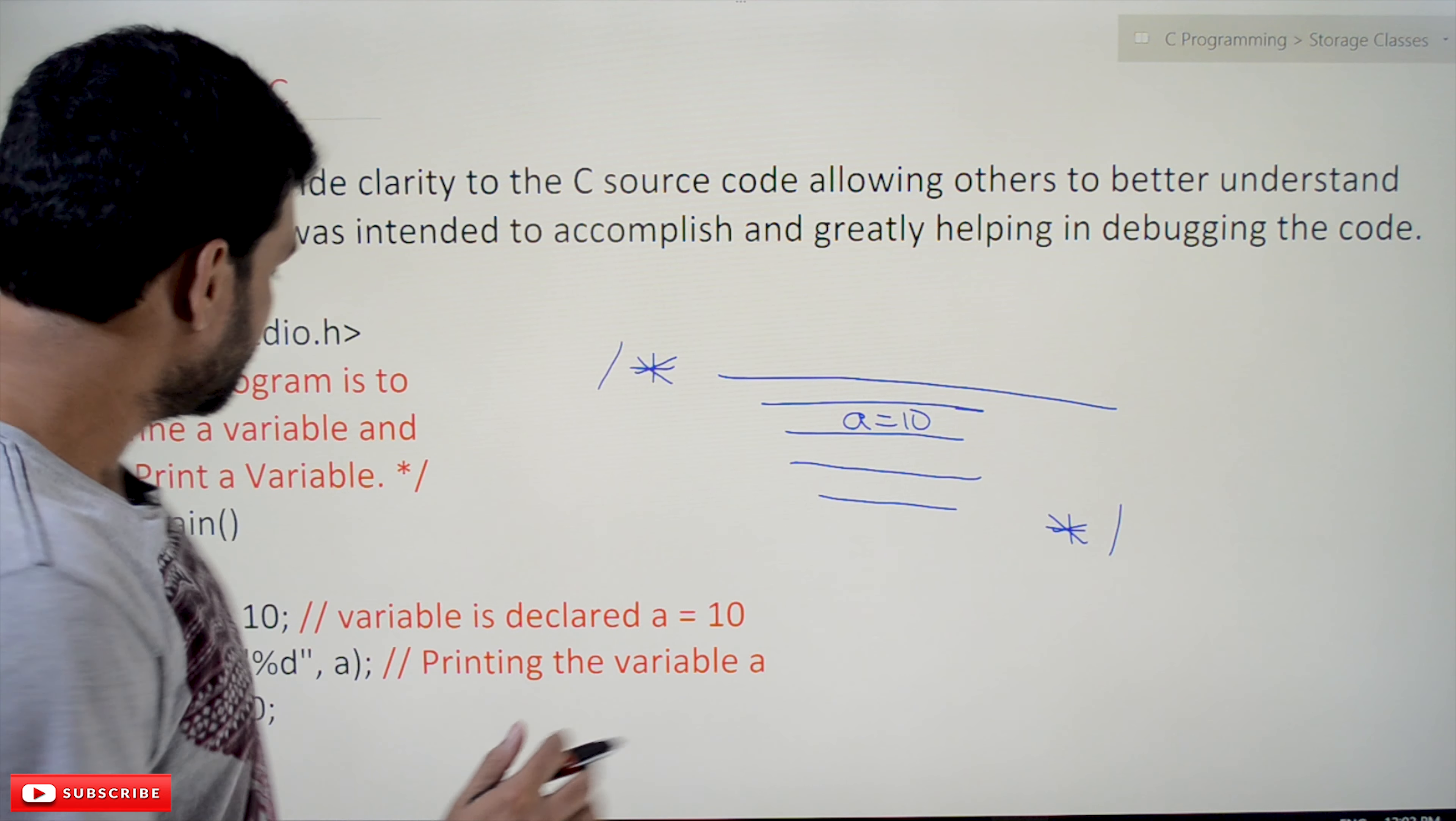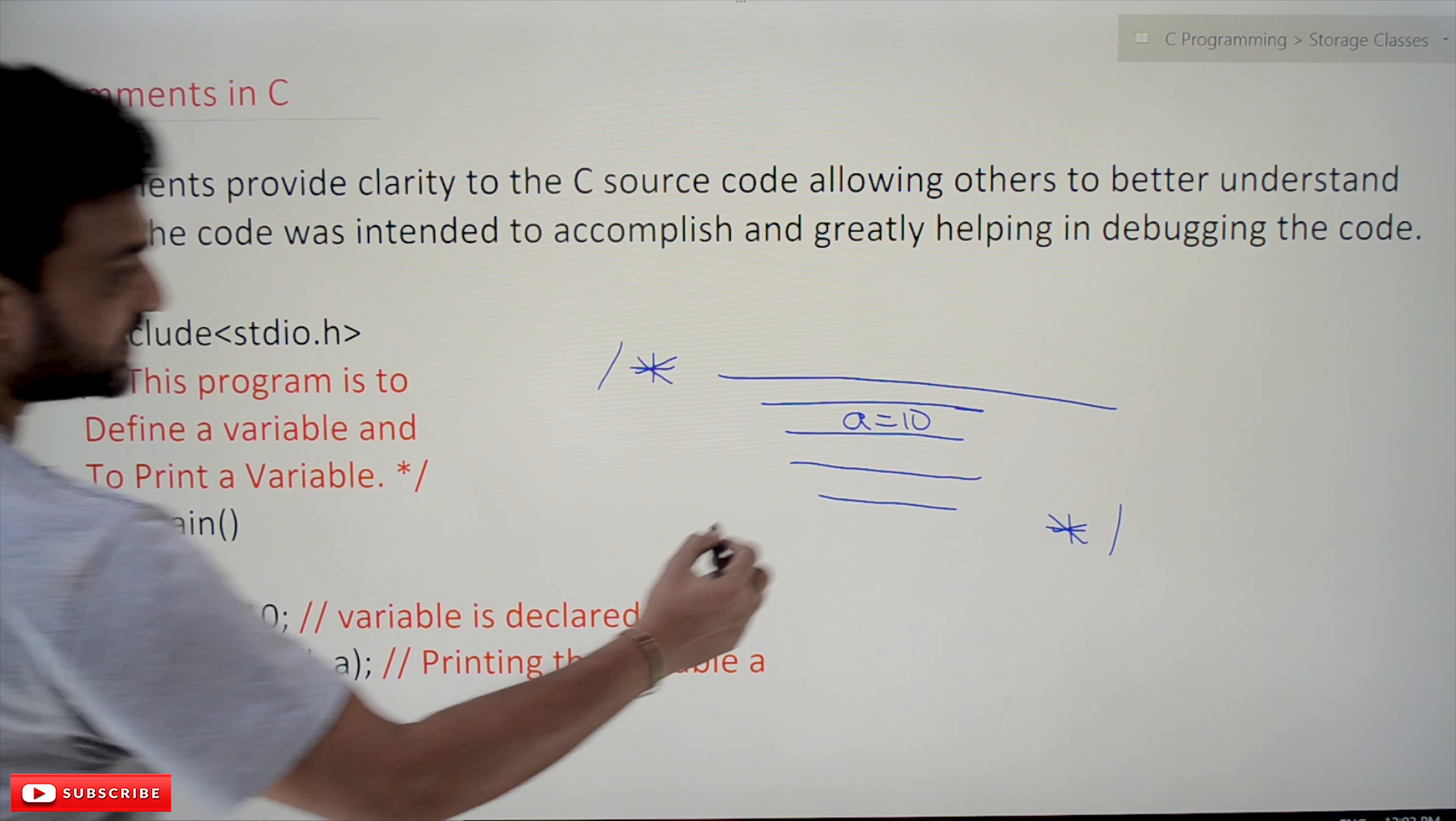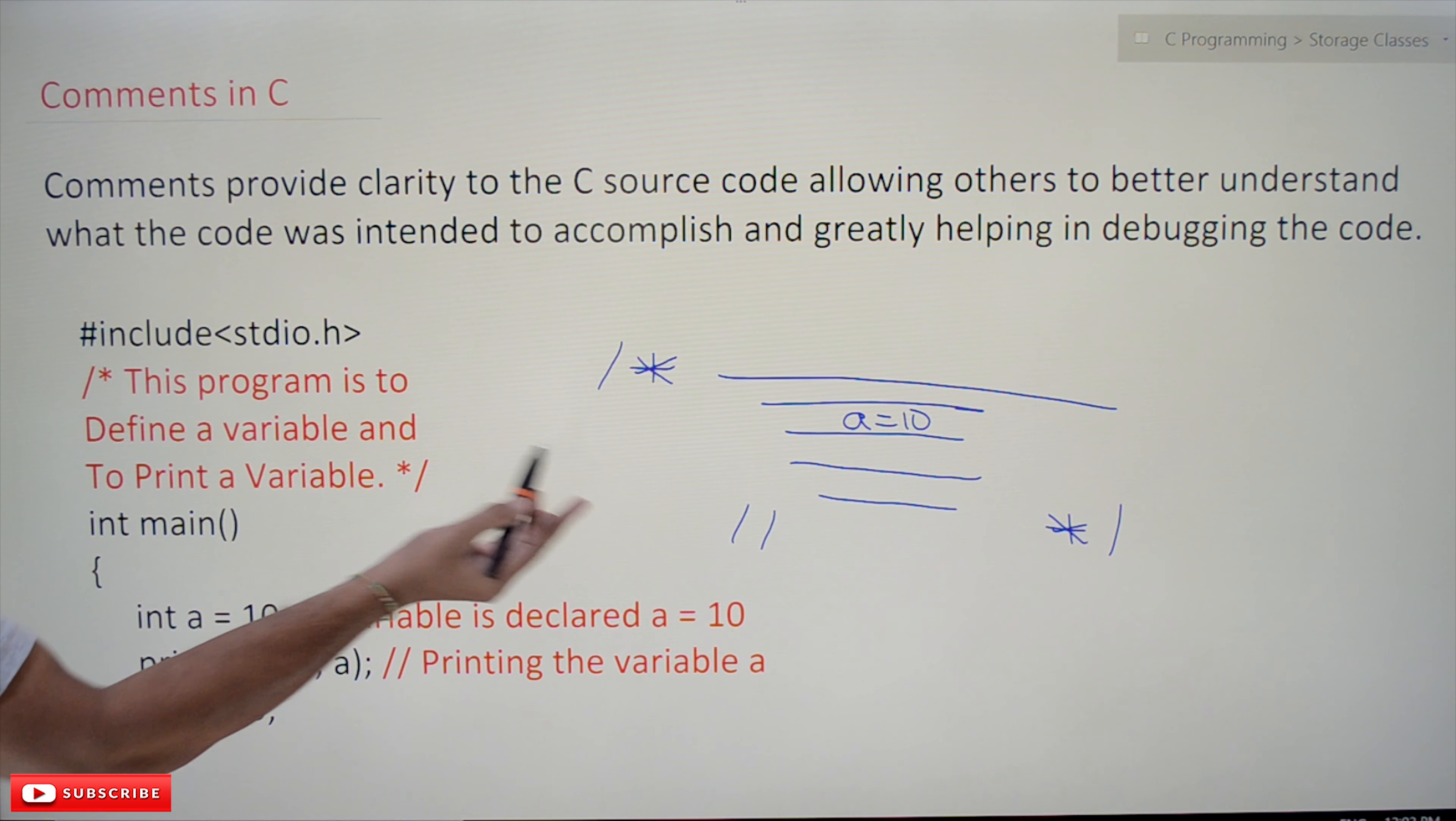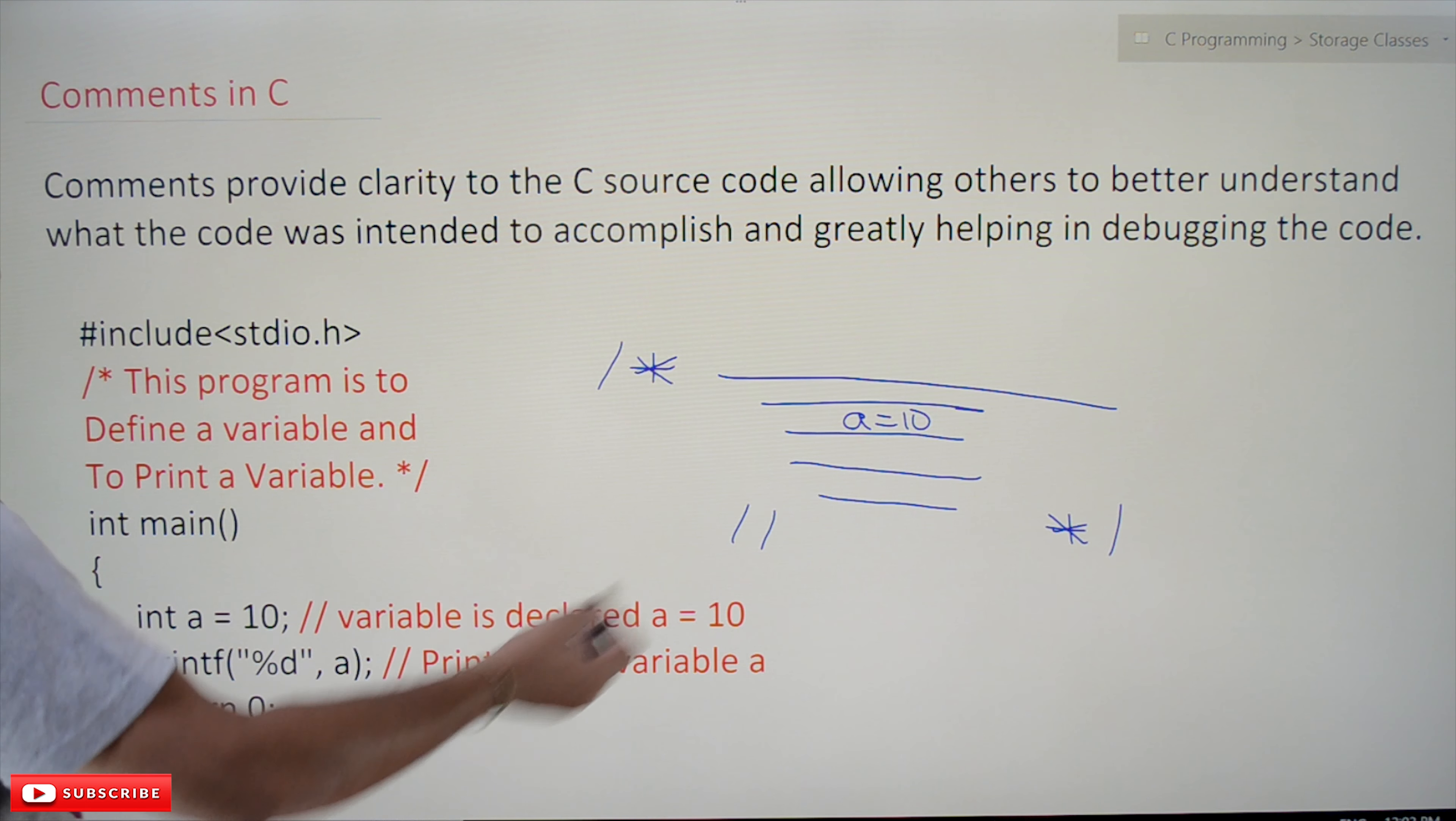This is single-line comments using double forward slashes (//). By giving double forward slashes, a comment in a single line can be provided. See here, 'a = 10' variable is declared...